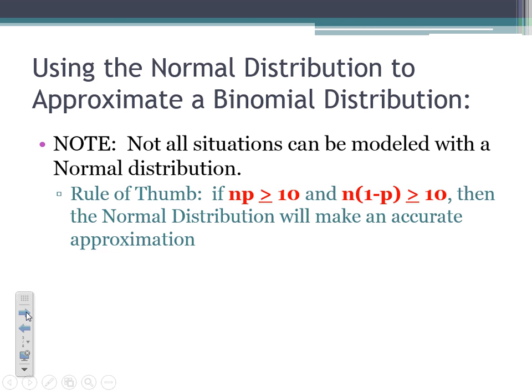If I want to use a normal distribution to approximate a binomial distribution, not all situations can be modeled this way. There are rules of thumb that must be met for the approximation to be accurate. Rule of thumb number one: n times p must be greater than or equal to 10, and n times (1 minus p) must also be greater than or equal to 10. We'll come back to why in second semester — for now, trust me on this.